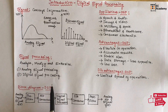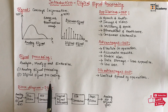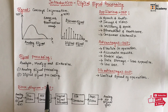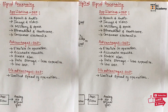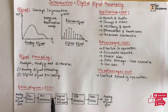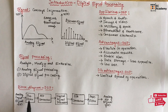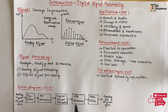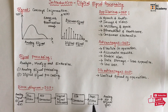In digital signal processing, an analog signal is converted into a digital signal. That digital signal is then processed. After processing, the digital signal is converted back to analog form. Now let us understand the block diagram of digital signal processing. In this block diagram, we can identify different blocks: pre-filter, analog to digital converter, digital signal processor, digital to analog converter, and post-filter.